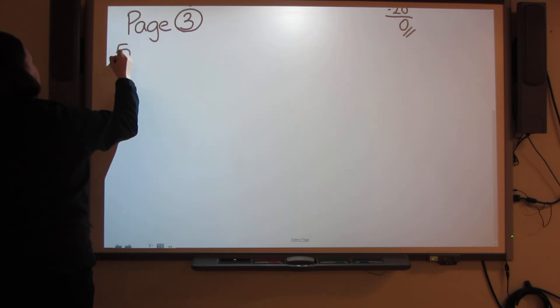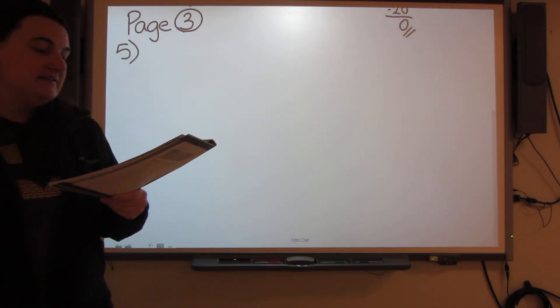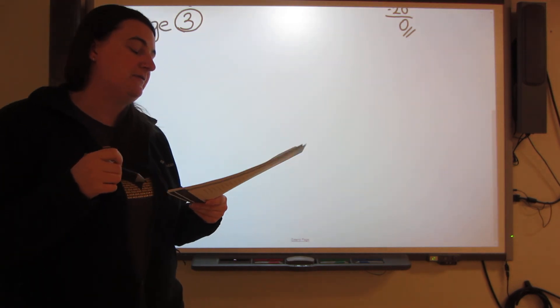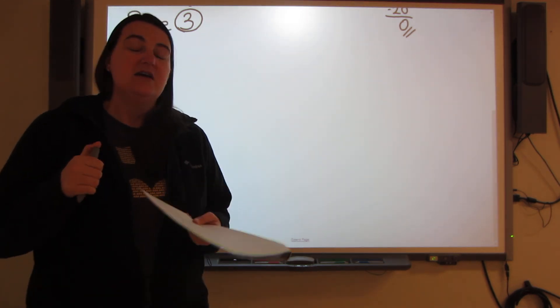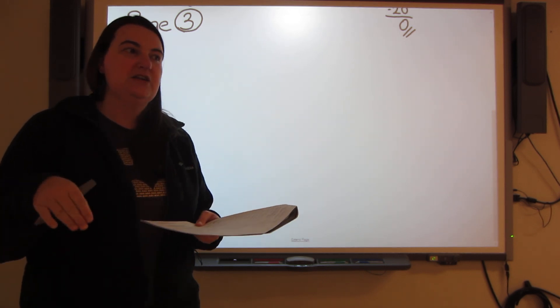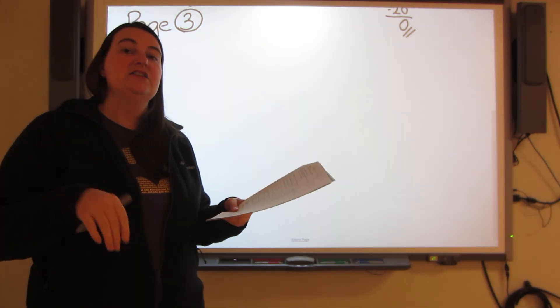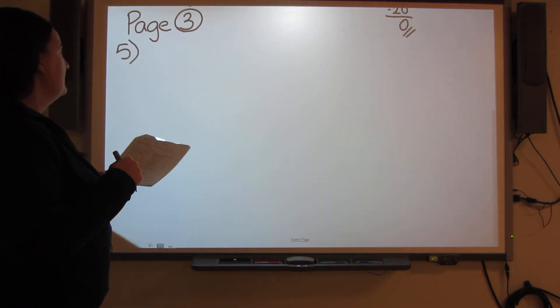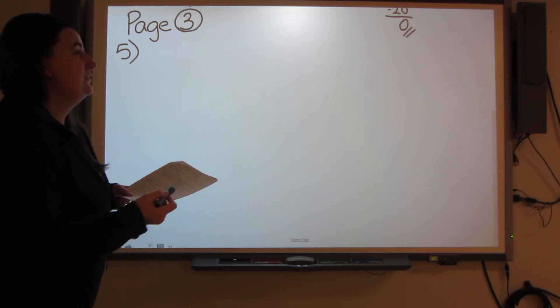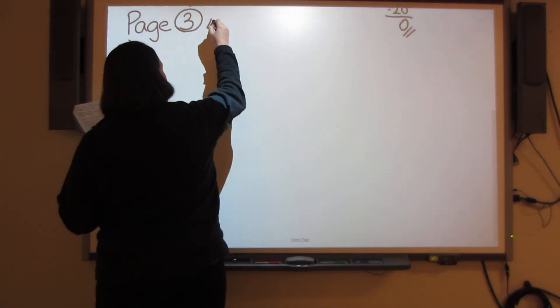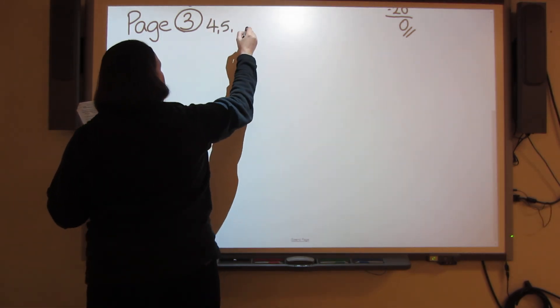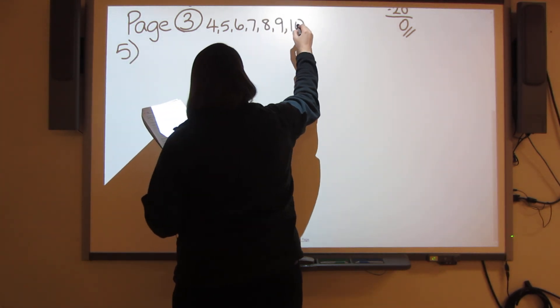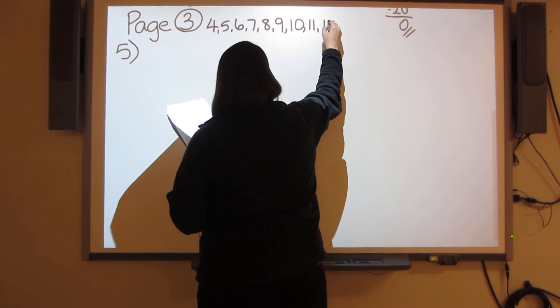I'm going to do number 5. It says state the ratios below for the whole numbers from 4 to 20. Whenever they're giving you that kind of information, it's always a good idea to write out that information before you start answering your questions. So I know I need to be working with the numbers from 4 all the way up to 20, so I'm going to write them down.